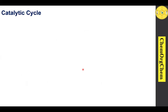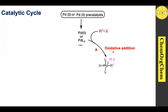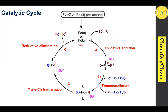Moving on to the catalytic cycle of the Stille cross-coupling reaction, the catalytic cycle starts with palladium(0) or palladium(II) precatalyst. When you use a palladium(II) precatalyst with a suitable ligand, it quickly generates palladium(0) in situ, which is a 14-electron species. This then undergoes oxidative addition with organoelectrophiles to produce a 16-electron species, which then undergoes transmetalation with organostannanes to produce another 16-electron species, followed by trans-cis isomerization, which is required for the next step — reductive elimination — producing the carbon-carbon coupling product.